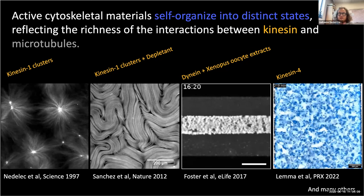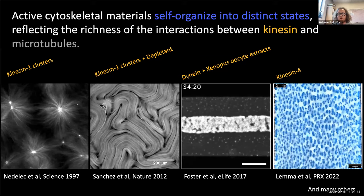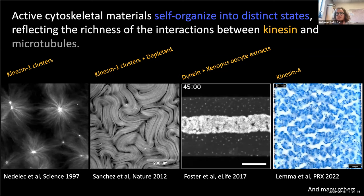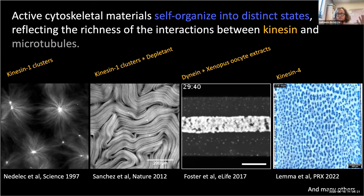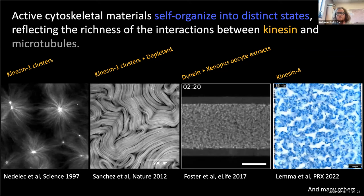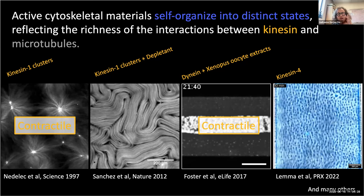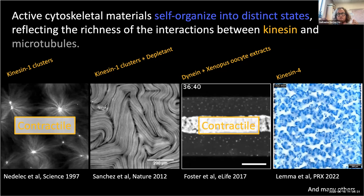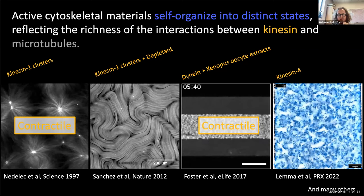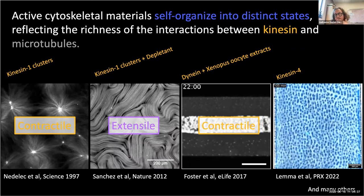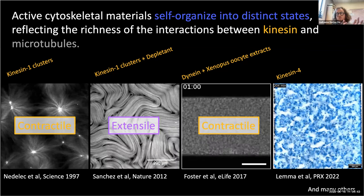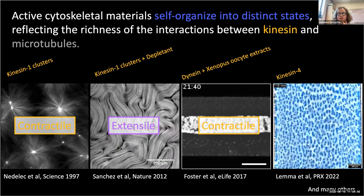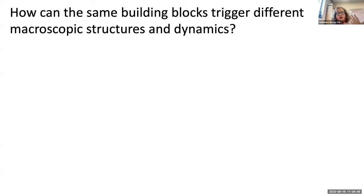This begs the question: is this something model-specific, or is there something more universal? Does it depend on where the microtubules come from or which motors are used? I'll label the asters as a contractile state and the extensile bundles as an extensile state. What I want to study is really the transition between those two states — how do we go from a contractile state to an extensile state, and how do the assembly components trigger different microscopic structure and dynamics?